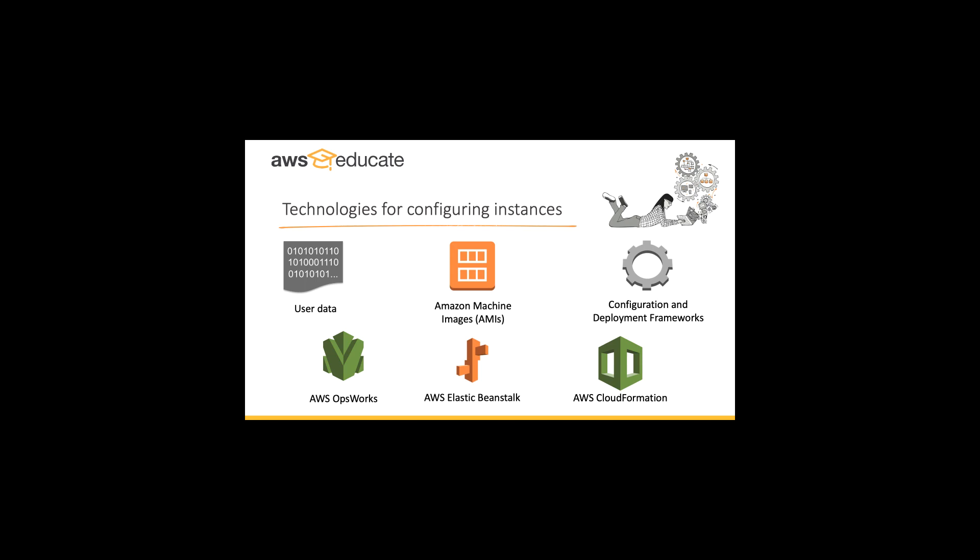AWS Elastic Beanstalk is another tool — an easy-to-use service for deploying and scaling web applications and services developed with Java, .NET, PHP, Node.js, Python, Ruby, Go, and Docker on familiar servers such as Apache, Nginx, Passenger, and IIS. You simply upload your code, and Elastic Beanstalk automatically handles the deployment — from capacity provisioning, load balancing, and auto-scaling to application health monitoring. At the same time, you retain full control over AWS resources powering your applications. There is no additional charge for Elastic Beanstalk — you pay only for the AWS resources you use.